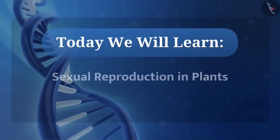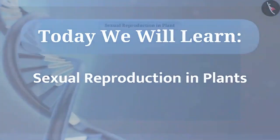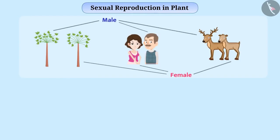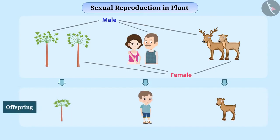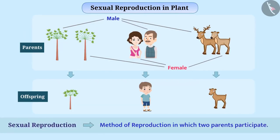Today we will learn sexual reproduction in plants. There are many organisms in the world such as flowering plants, humans, various animals, etc., which require males and females to produce offspring. Such a method of reproduction in which two parents participate is called sexual reproduction.